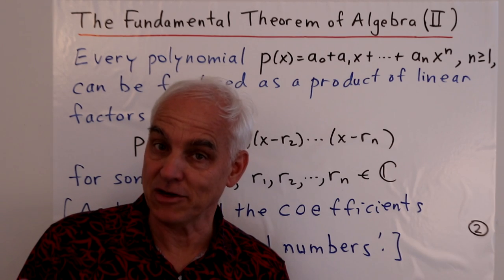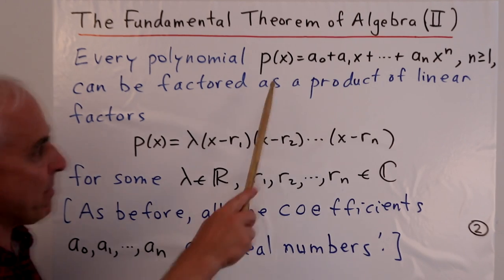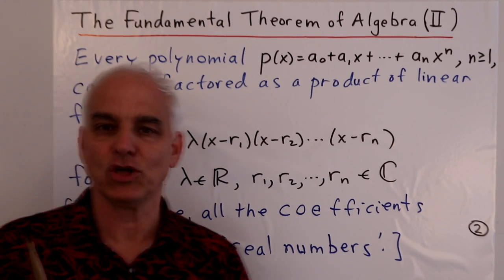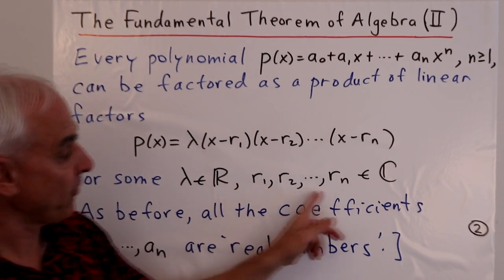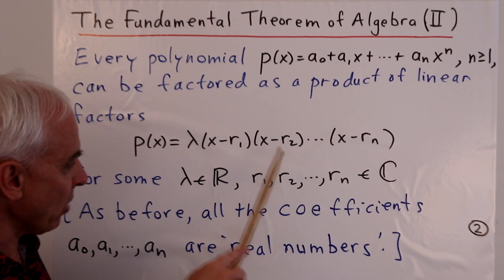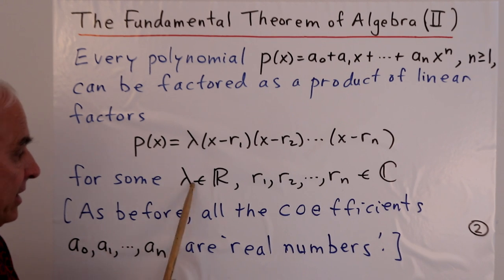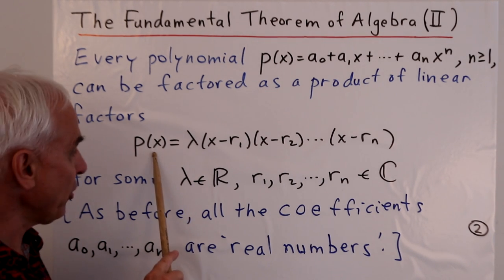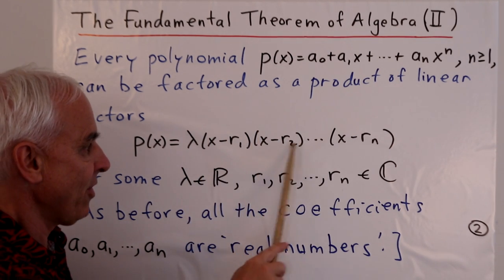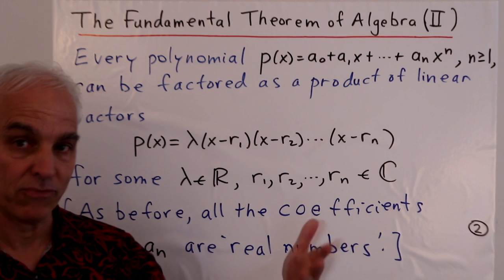And now here is the second version or alternate version of the fundamental theorem of algebra, which asserts that a polynomial of degree at least one can be factored as a product of linear factors, if we're allowing ourselves complex coefficients. So we can find complex numbers r_1, r_2 up to r_n, where n is the degree of the polynomial, and a lambda real number, so that the polynomial is actually equal to lambda times the factor (x - r_1) times the factor (x - r_2), all the way up to the factor (x - r_n).